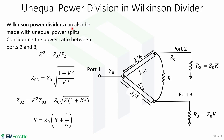Wilkinson power dividers can also be made with unequal power splits. We consider the power ratio between ports 2 and 3 to be a constant k², which equals P3 over P2. To obtain unequal power division, we need to find impedances for the quarter-wavelength transmission lines Z02 and Z03, and the resistance Z0k. Z03 equals Z0 times the square root of (1 + k²) over k³, Z02 equals k² times Z03, and the value for R is Z0 times (k + 1/k).